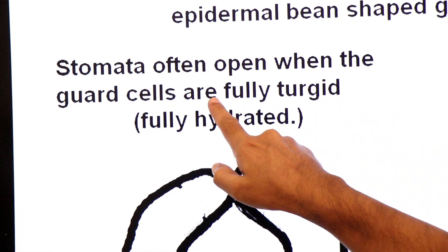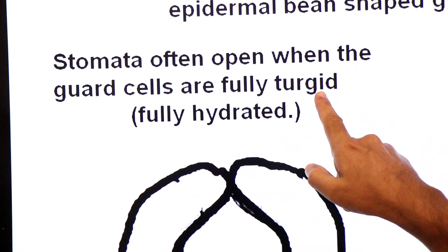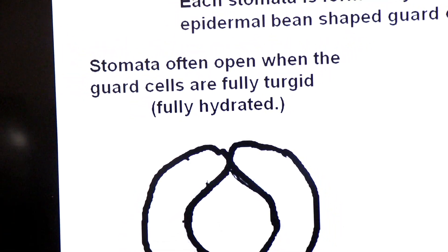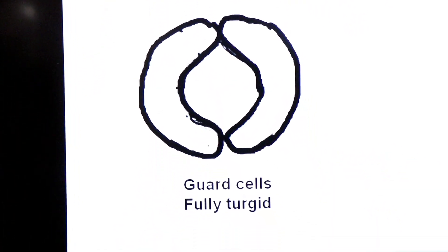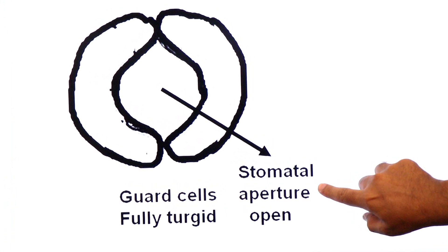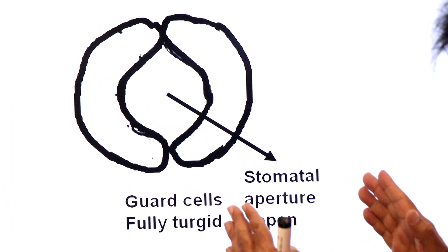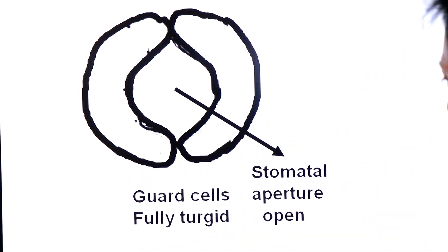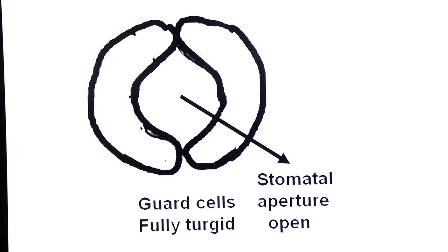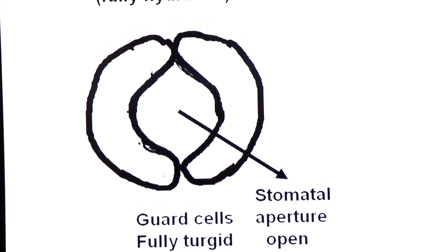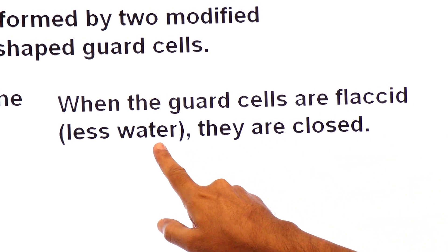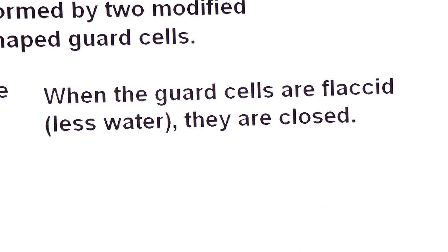When the guard cells are fully turgid — meaning fully hydrated — the stomata are open. When the guard cells are flaccid — meaning they have less water — the stomata are closed. So the turgidity of guard cells directly determines whether the stomatal aperture is open or closed.